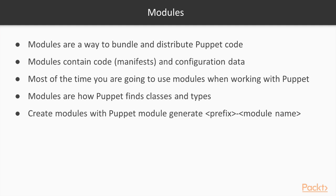You can create modules with the command `puppet module generate`. You need to specify a prefix and then the module name. The prefix is used on the Puppet Forge when you would like to publish your module, because more than one organization could publish a module called Apache, and the prefix is used to separate those two Apache modules.